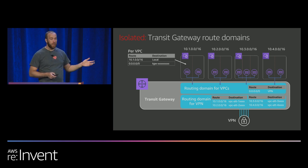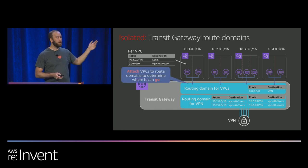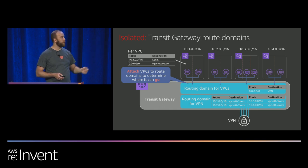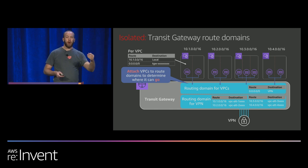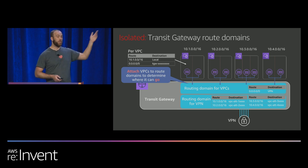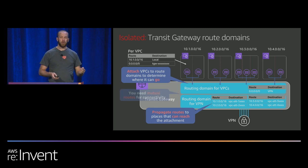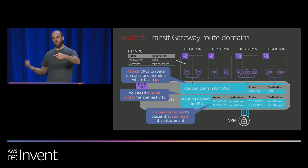When you attach a VPC to a route table, that defines where it's allowed to go. You propagate your routes to people that should be able to reach you. In this case, the VPCs want to be reached by VPN, so we propagate routes to that route table. We want to make sure those two things match — the routes we have are also propagated — so there's two-way communication.